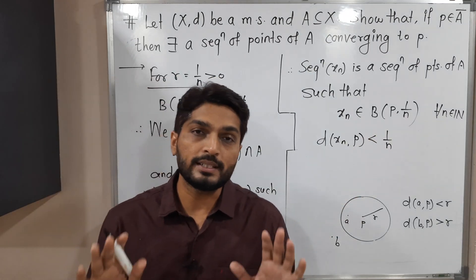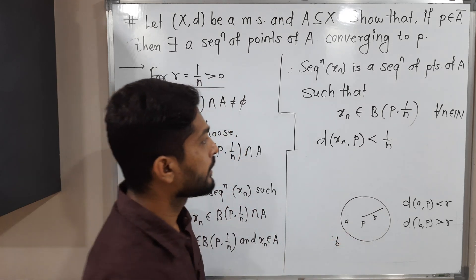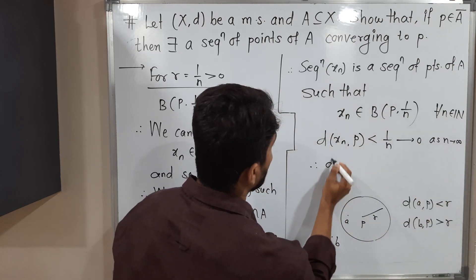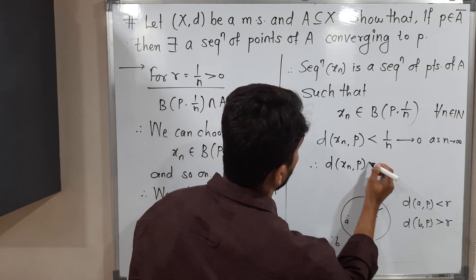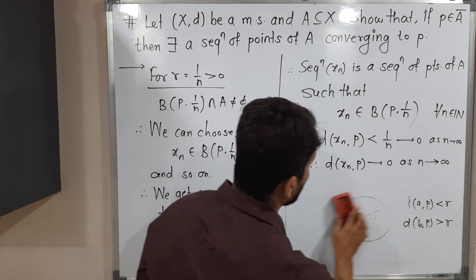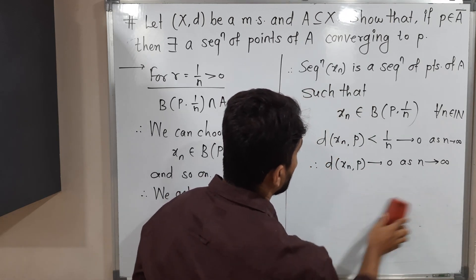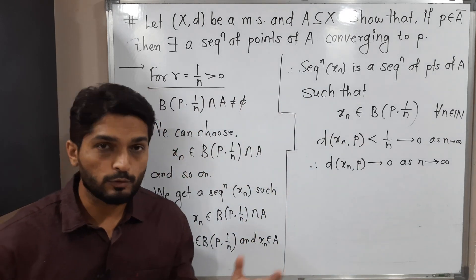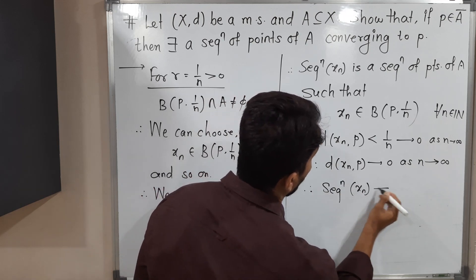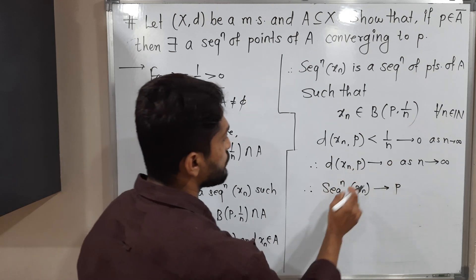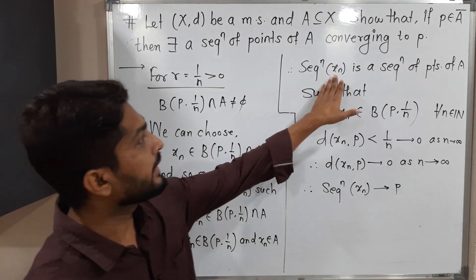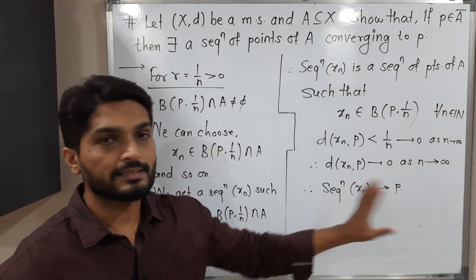You know that 1/n is a very standard sequence and it converges to zero. So 1/n converges to zero as n tends to infinity. That means the distance between Xn and P also tends to zero as n tends to infinity. Therefore, the distance between Xn and P tends to zero, which means the sequence Xn converges to P.